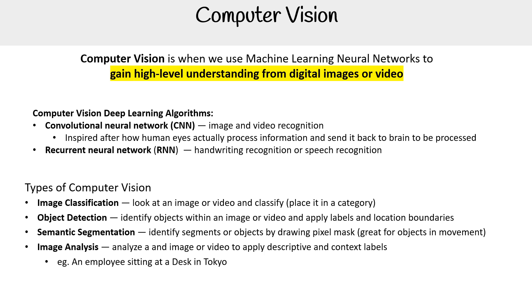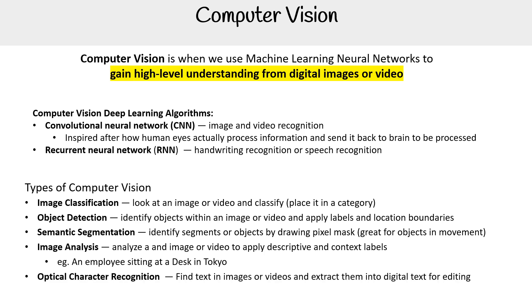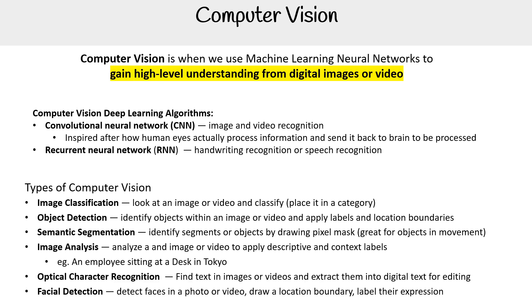For example, image analysis might produce a label like 'an employee is sitting at a desk in Tokyo.' We also have optical character recognition, or OCR, which finds text in images or videos and extracts it into digital text for editing. And facial detection detects faces in a photo or video, draws a location boundary, and labels their expression.